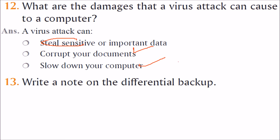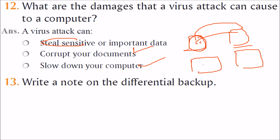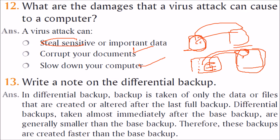Write a note on differential backup. There are two types of backup. In full backup, every time you back up the full amount of data from one machine to another storage device. In differential backup, you only back up those files which have been modified. Differential backup is taken of only the data or files created or altered after the last full backup. Taken almost immediately after the base backup, differential backups are generally smaller and therefore created faster than the base backup.